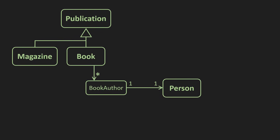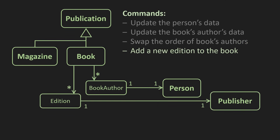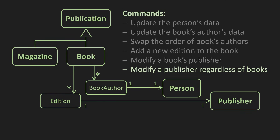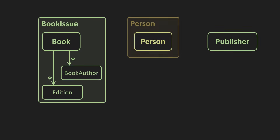There are many ways to change the values in the database. We could update the person's data directly, or through the book — like updating the author's name if we notice a typing mistake — or by swapping the order of authors or editors again through the book, or add an edition or modify the publisher, once again starting from either end of the connection. DDD addresses this explosion of different joins by grouping entities and values into aggregates.